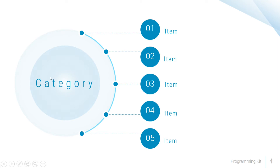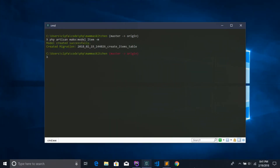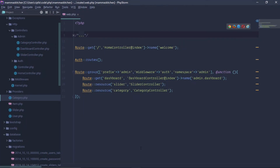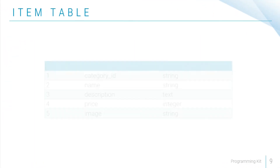So we define a one-to-many relationship and its inverse — meaning the category has many items, and the item belongs to the category. If the migration is successfully created, then we have fields to edit.